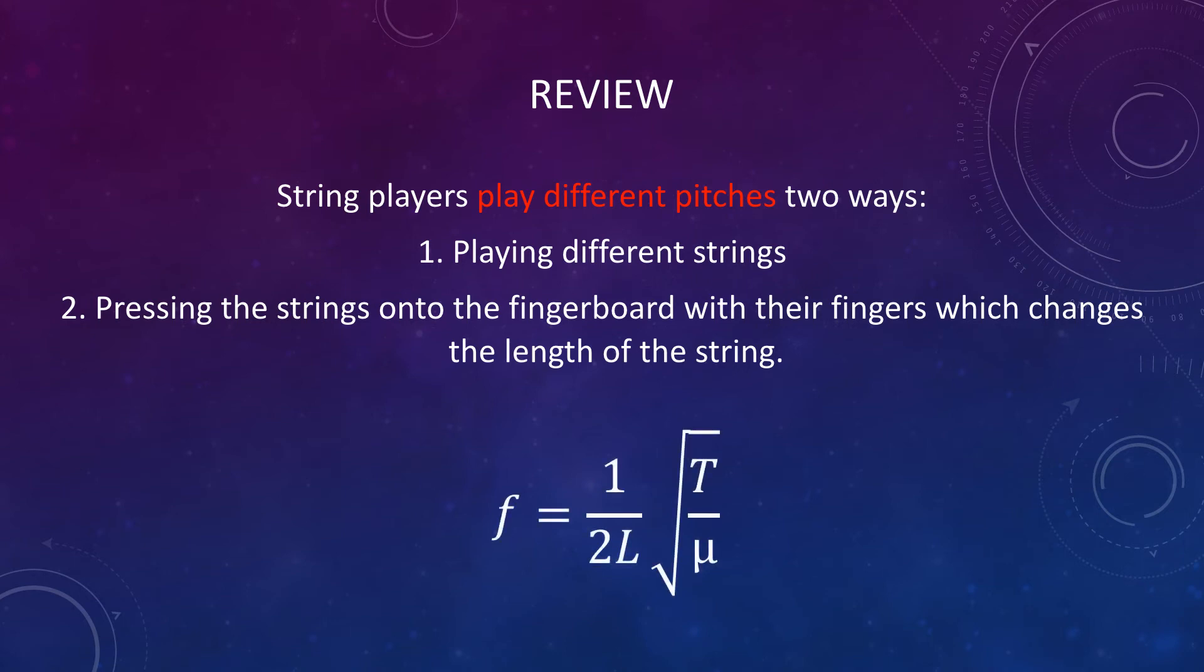The frequency of a string can be determined by the formula F equals 1 over 2L times the square root of T over μ.